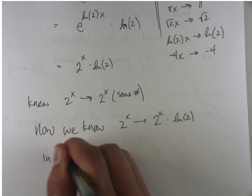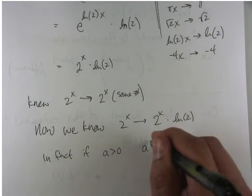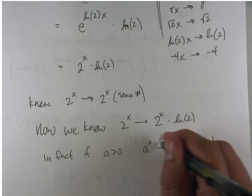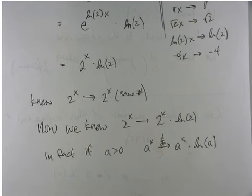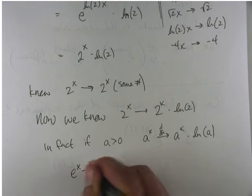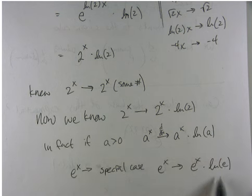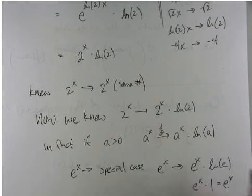In fact, if a is bigger than 0, then the derivative of a to the x is a to the x times the natural log of a. Here's a general rule for all exponential functions — even e to the x. That gives e to the x times the natural log of e. But the natural log of e is 1, because e to the first power is e. So this is e to the x times 1, which is e to the x. The derivative of e to the x is e to the x — it follows this rule also.